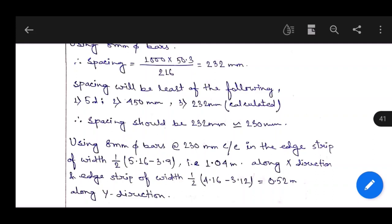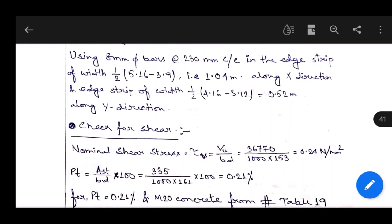In this case we use half because from the full effective span, if we deduct middle strip, we get total length of edge strip from both sides. But for reinforcement design, we need to know one side of edge strip only, so we multiply by half to get one edge strip.